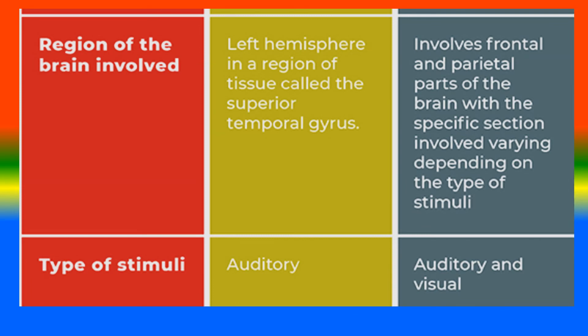Regions of the brain involved: the cocktail party effect involves the left hemisphere in a region of tissue called the superior temporal gyrus. Selective attention involves frontal and parietal parts of the brain, with the specific section involved varying depending on the type of stimuli.